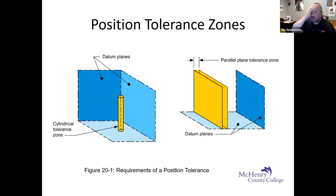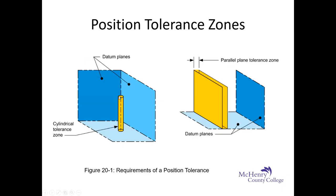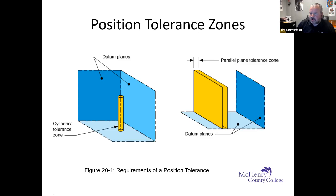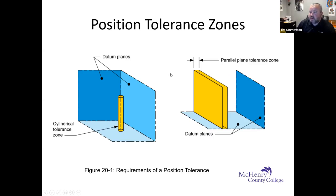What does a position tolerance zone look like? We've got two different types of tolerance zones. One's a cylindrical tolerance zone — and if we're going to have a cylindrical tolerance zone, we need the diameter symbol in our feature control frame. If our feature is a planar feature, then our tolerance zone becomes a parallel tolerance between two planes. We'll talk about that more when we open up SolidWorks.